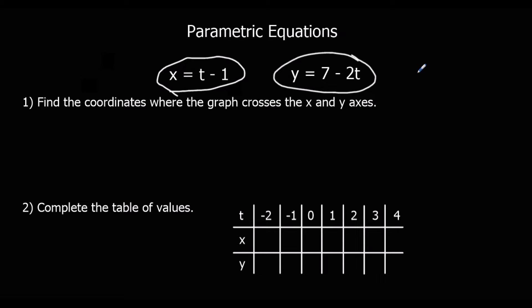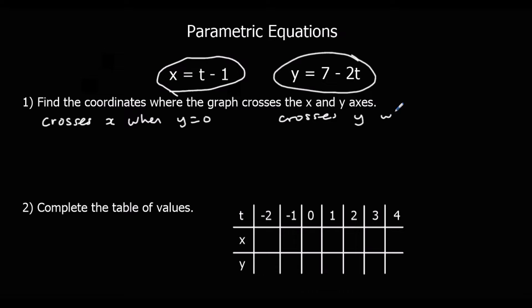So we've got two separate equations linked by t, the third variable. The first question says: find the coordinates where the graph crosses the x-axis and the y-axis. We know it crosses the x-axis when y equals 0, and it crosses the y-axis when x equals 0.